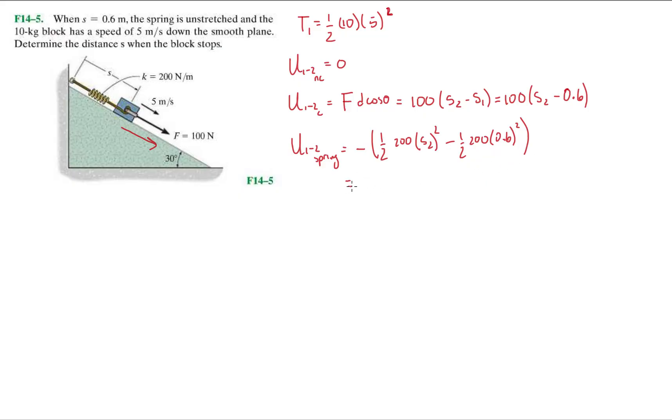Okay, let's clean this up a bit. This will be minus 100, so that first term, S2 squared plus, oops, so that's 0.6 times 100 plus 36. Okay, so that's the work done by the spring. All right, I think we're done. Nope, we're not done. Gravity is doing some work here as well.